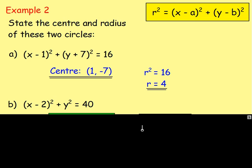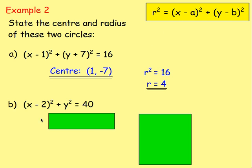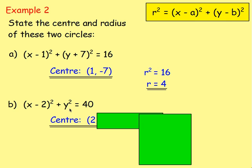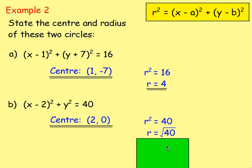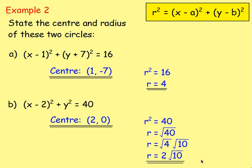Next one: x minus 2, all squared, plus y squared, equals 40. We want the centre and the radius. Taking away 2 in the x part means the x-coordinate is 2. It's just y squared, so the y-coordinate is 0. Centre is 2, 0. R squared equals 40, so r equals root 40. Simplify: root 40 equals root 4 times root 10, and root 4 is 2, so the radius is 2 root 10.